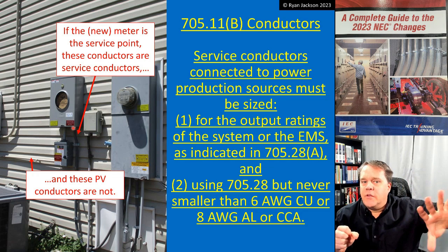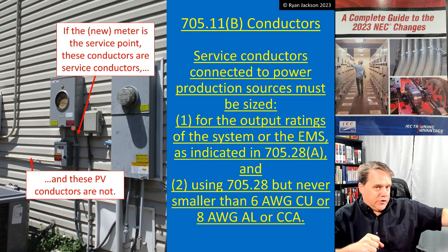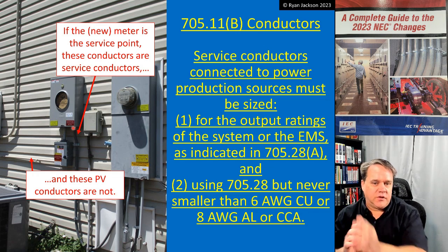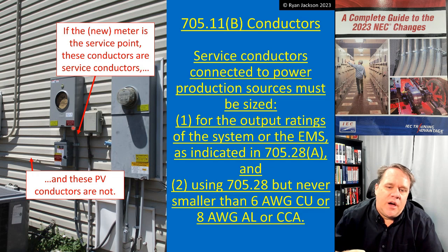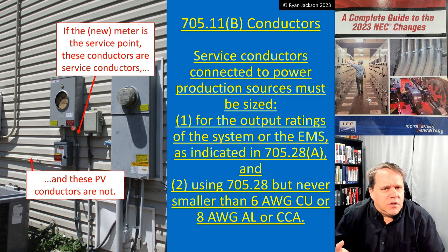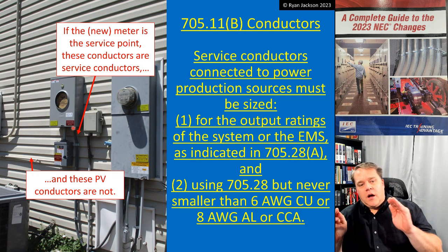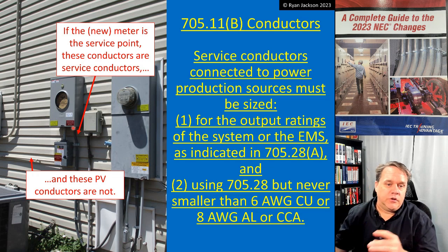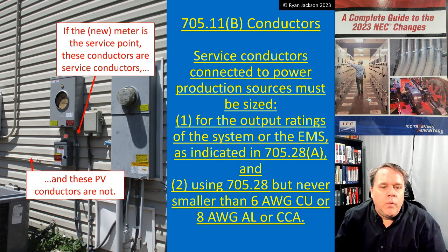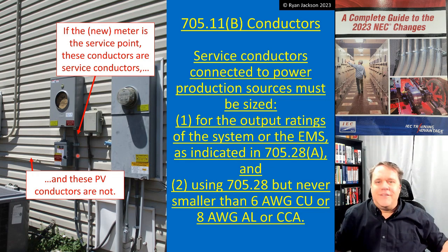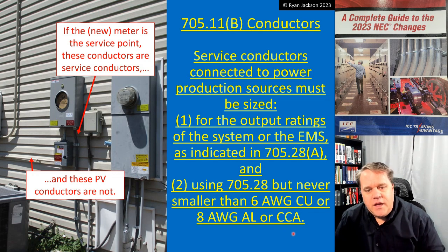Maybe you install an energy management system on the PV system and say you're never going to generate more than 30 amps. You'd take 30 amps times 125% because we treat it as a continuous load, and you'd size those conductors based on the energy management system settings. And number two: not smaller than 6 AWG copper or — I initially said 8 AWG aluminum, but let me check the code. We need to have a minimum size because if the utility conductors fault, we don't want small wires to just evaporate.